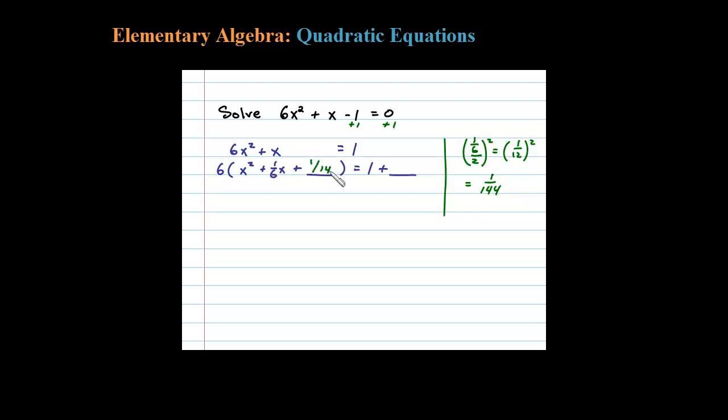So the special number that's going to complete the square is 1/144. We need to balance that number out by adding something to the right side. If I were to multiply the 6 back in, 6 times 1 over 144 is 1 over 24. 6 goes into 144 24 times.